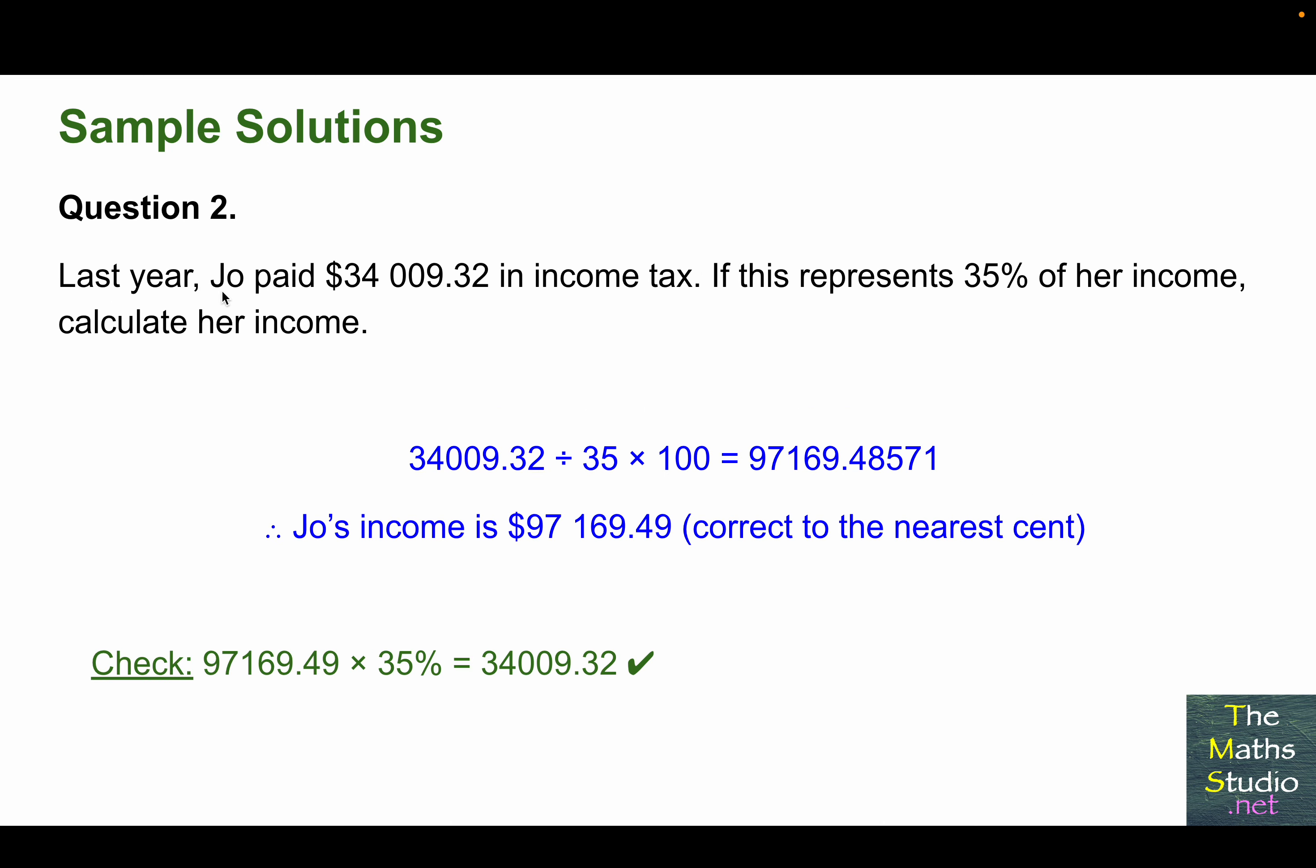For question 2, we have last year, Jo paid $34,009.32 in income tax, and this represents 35% of her income. So starting off with $34,009.32, dividing that by 35, multiplying that by 100, we get 97,169.48571. And because we're dealing with a dollar amount, we need to answer correct to the nearest cent, or correct to two decimal places. So therefore, Jo's income is $97,169.49, correct to the nearest cent.